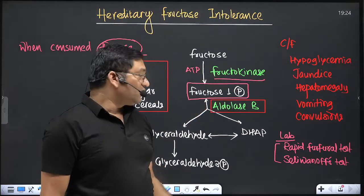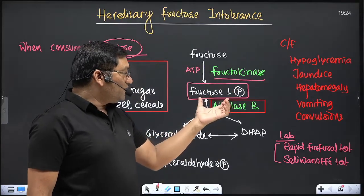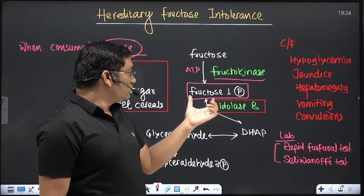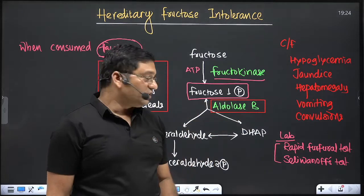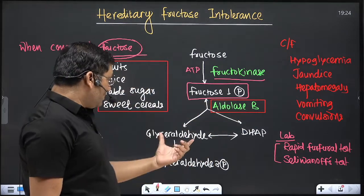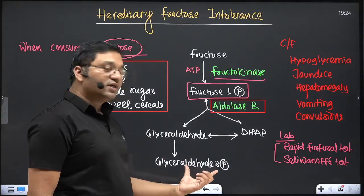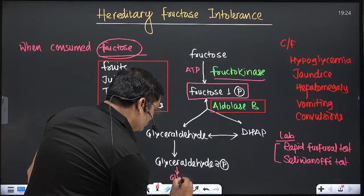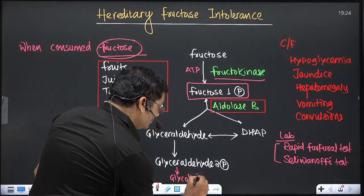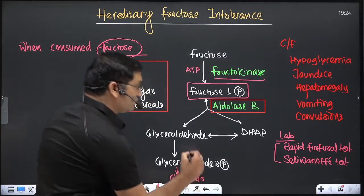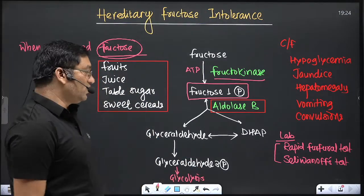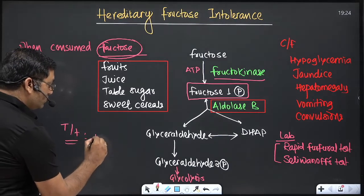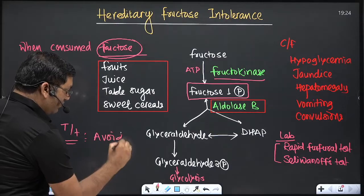Fructose-1-phosphate is then converted into glyceraldehyde and DHAP by aldolase B (fructose-1-phosphate aldolase). Glyceraldehyde is further converted into glyceraldehyde-3-phosphate and enters glycolysis to be metabolized. The treatment for this condition is to avoid a fructose- and sucrose-rich diet.